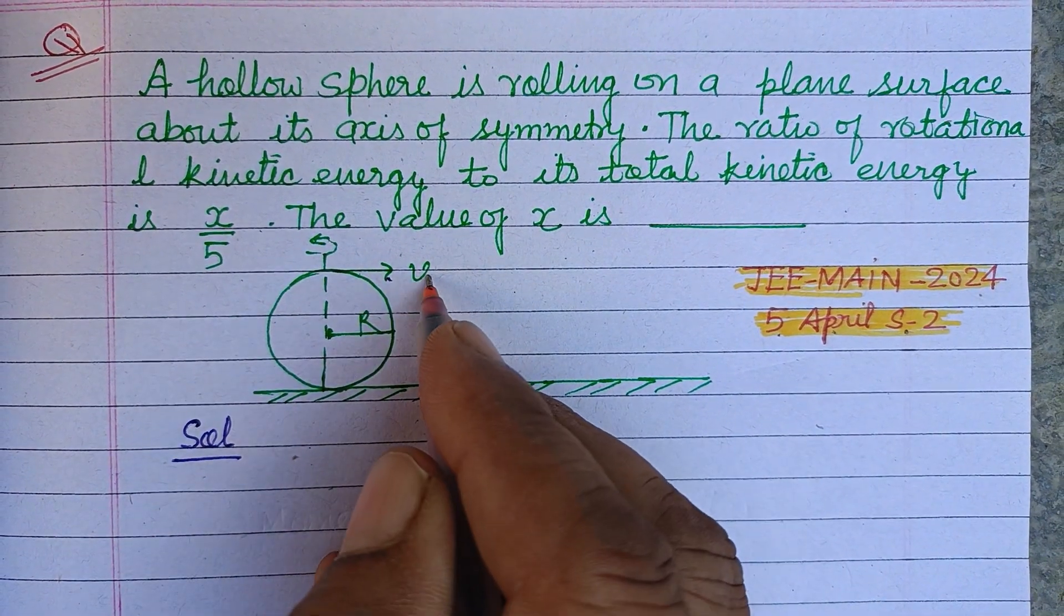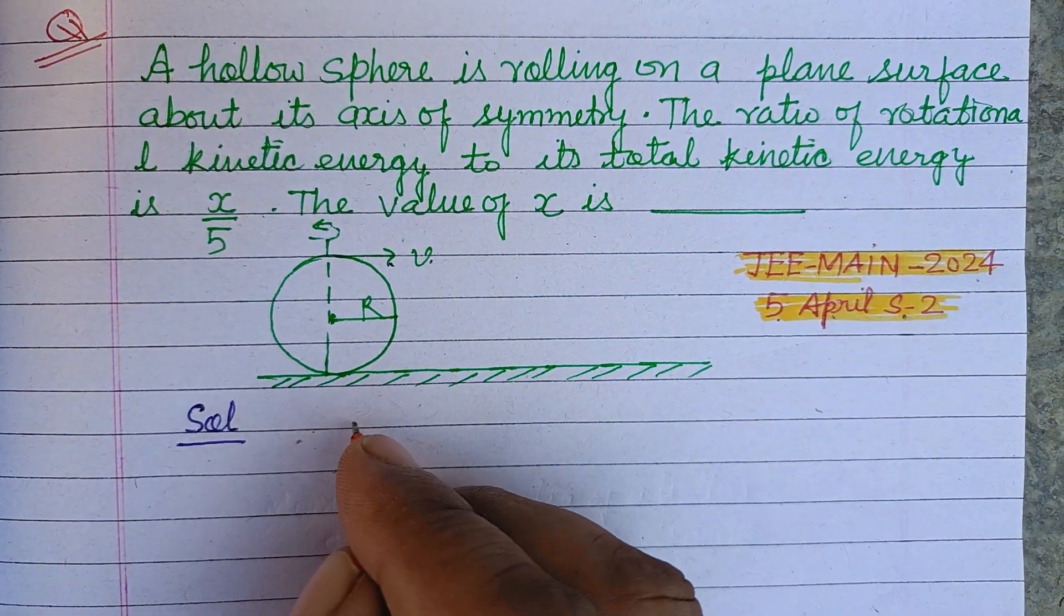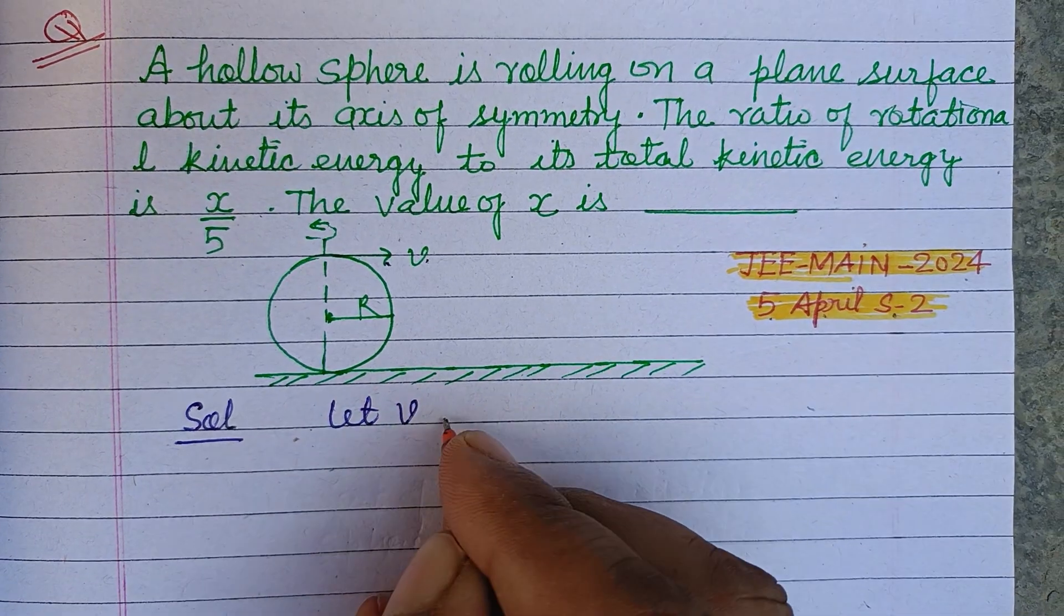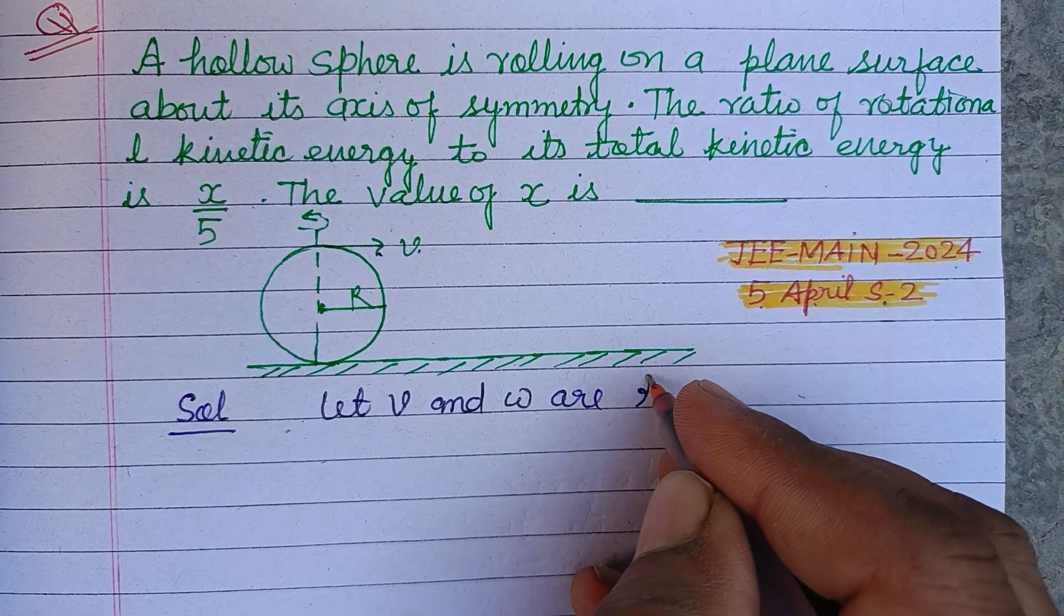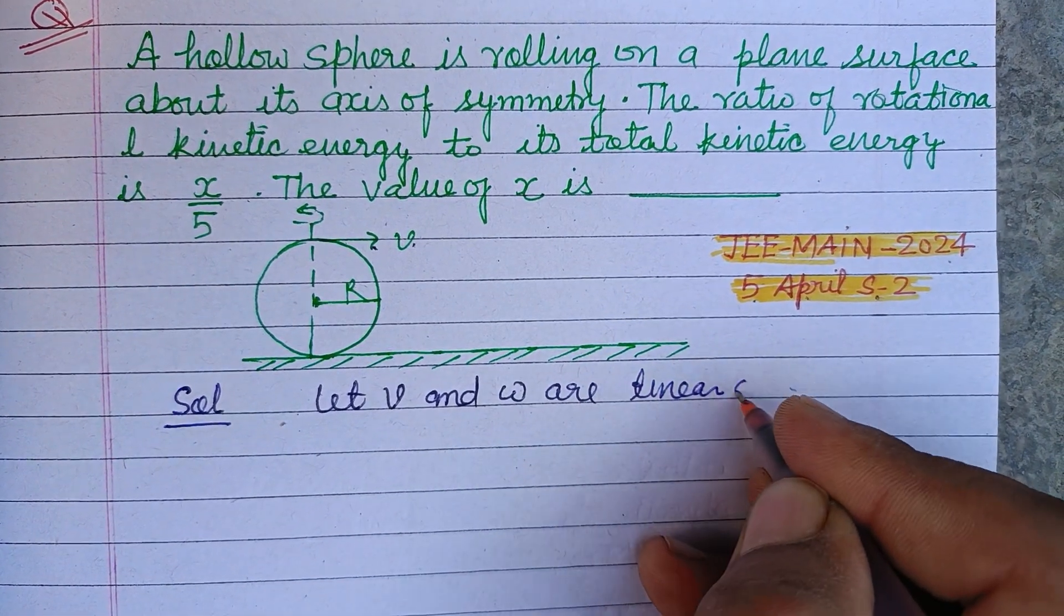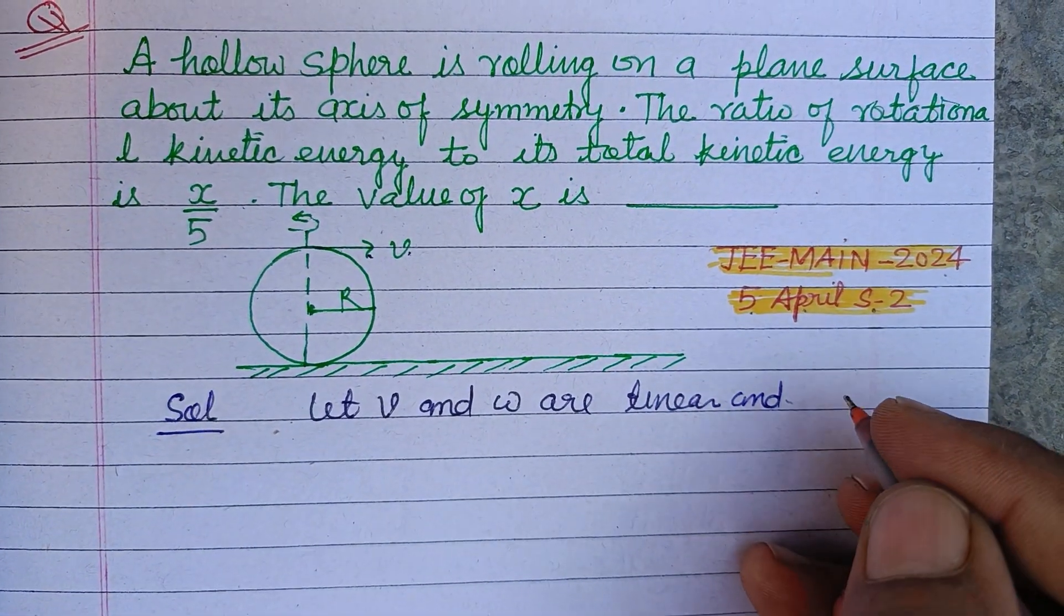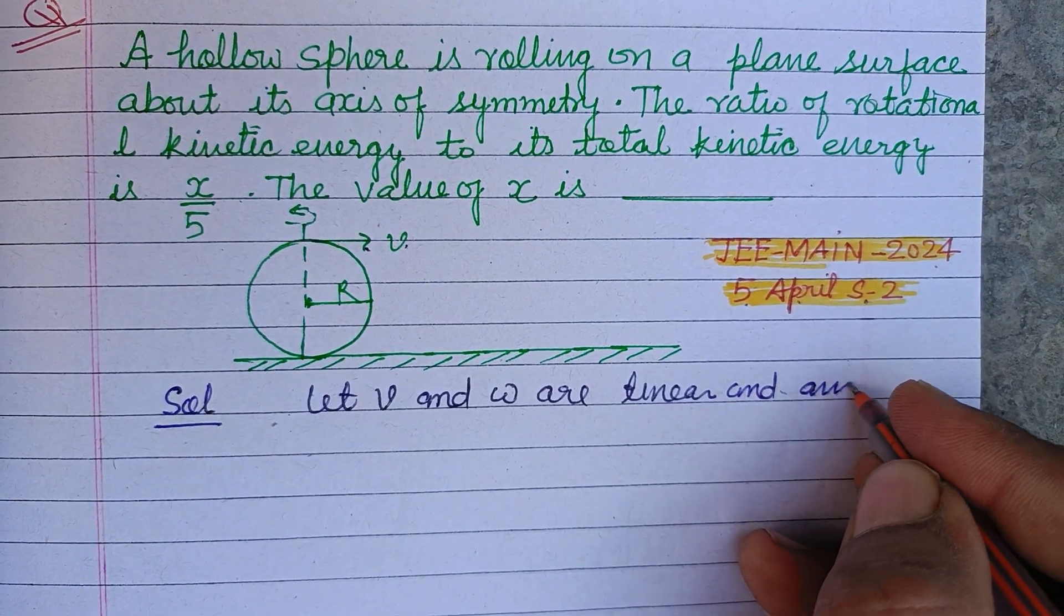So students, here hollow sphere is rolling on a plane. Let its velocity is v. Let v and omega are linear and angular velocity of hollow sphere.